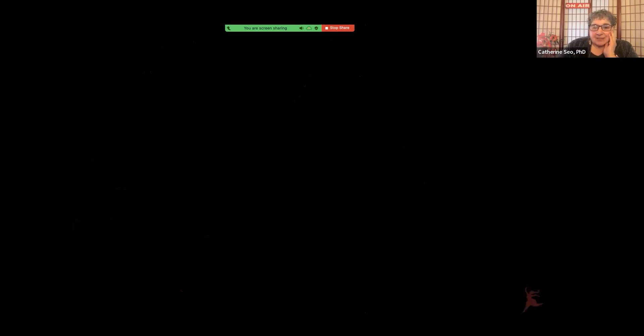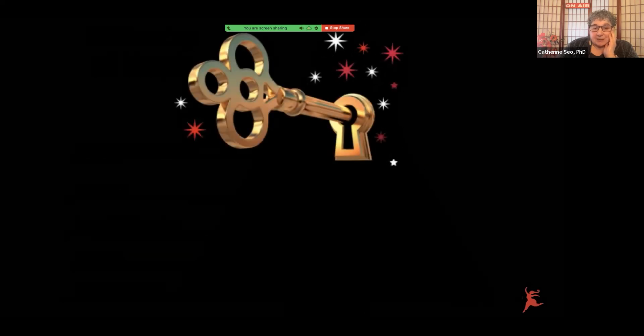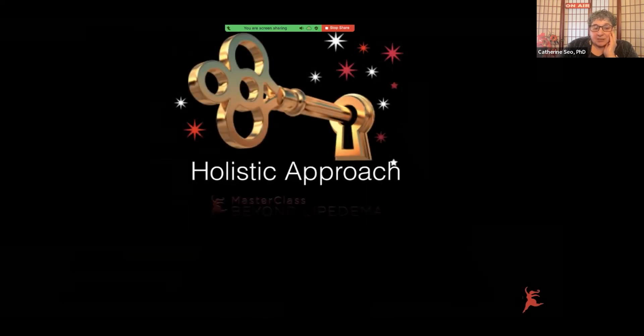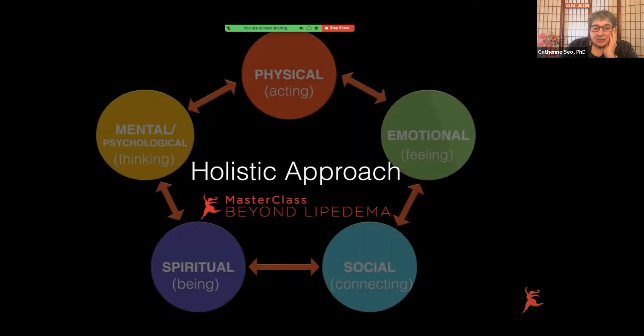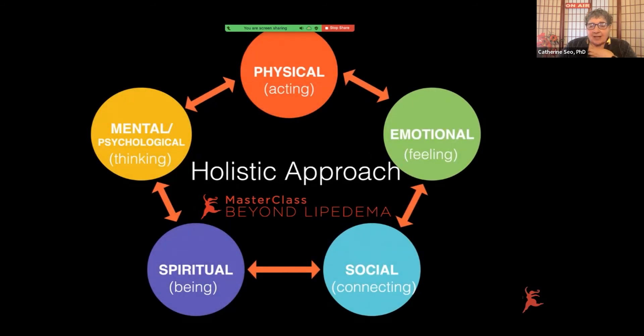And Maslow's hierarchy of needs fits in really well with our holistic approach. Because what we realized is that we needed each and every one of these dimensions in order to heal. In order to live the kind of lives that we really wanted to live, which were full and vibrant and workable.